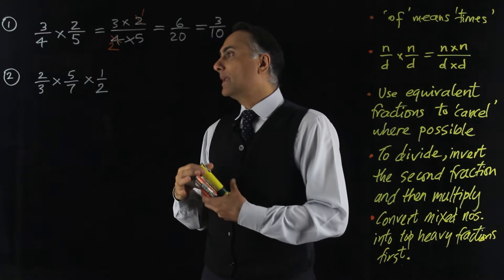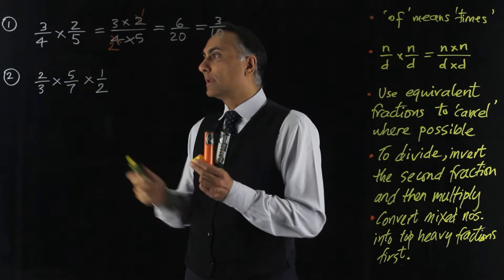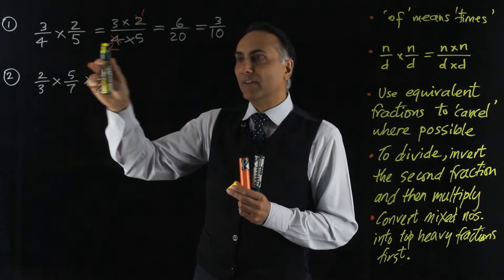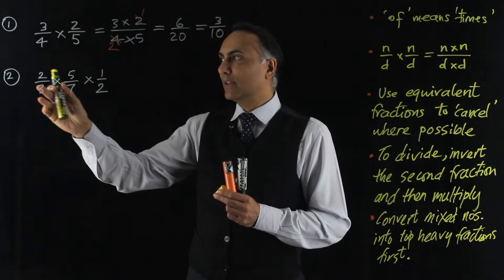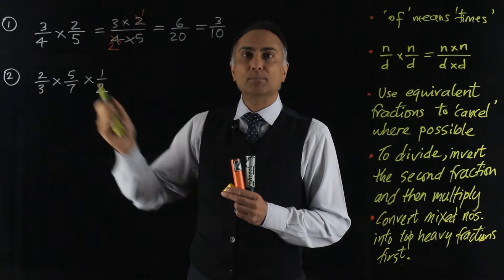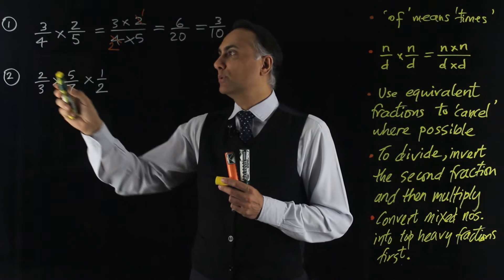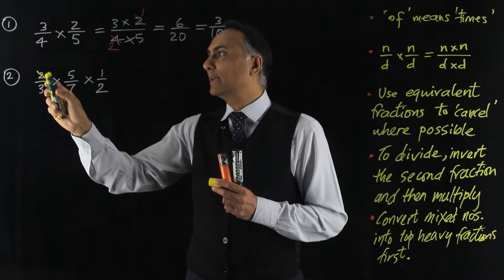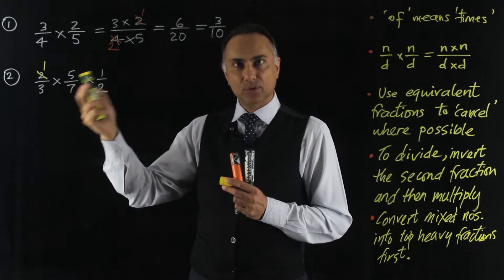So the first thing is I see that my numerators are 2, 5, and 1, and my denominators are 3, 7, and 2. So 2 and 2 can both be divided by 2. And when I divide 2 by 2, I get a 1. So I've reduced it to a 1.